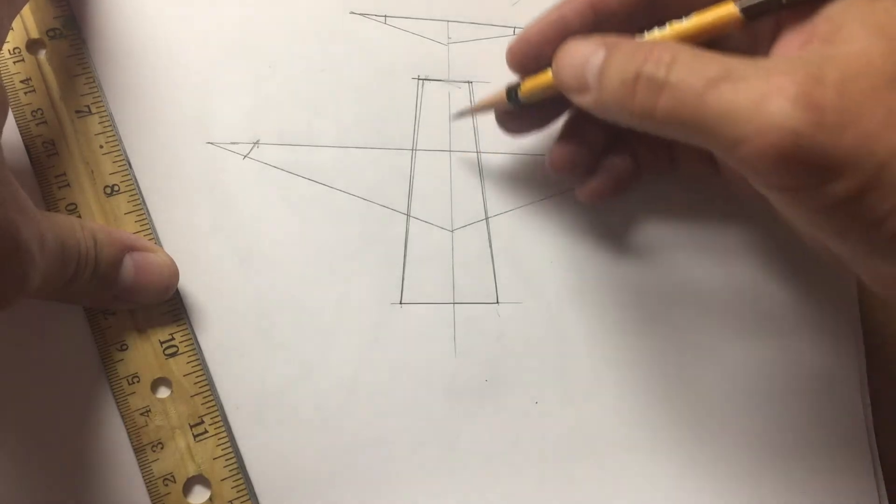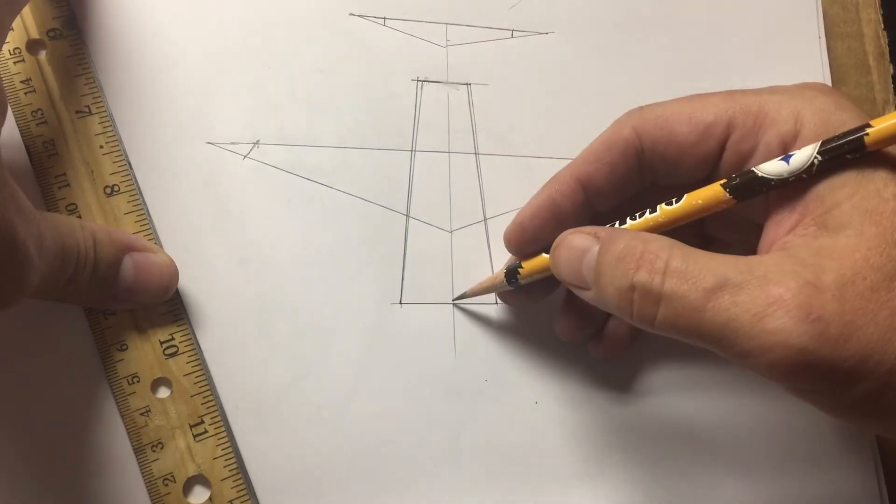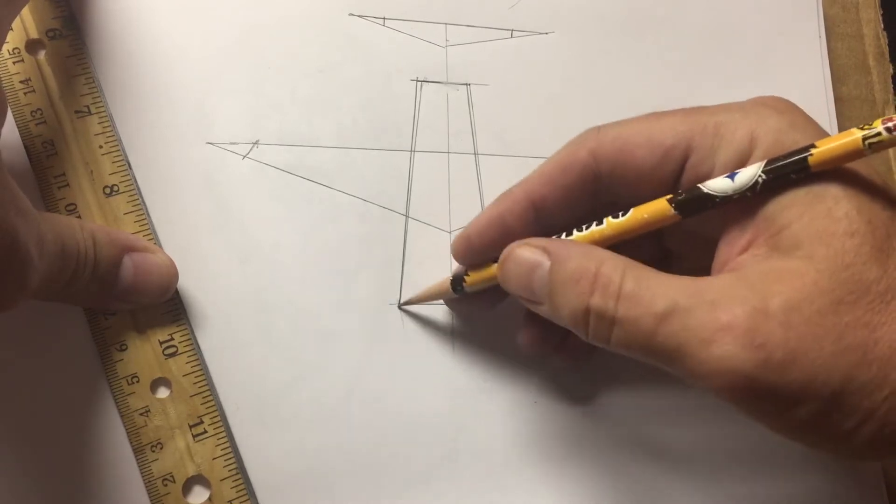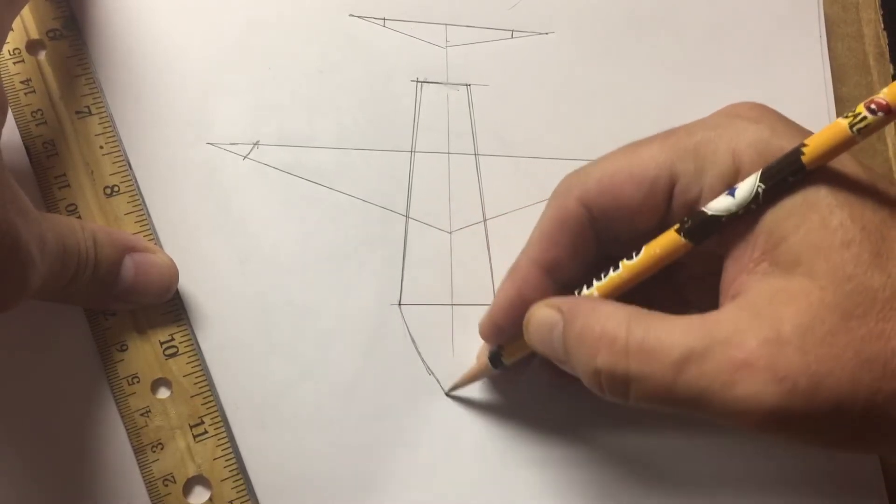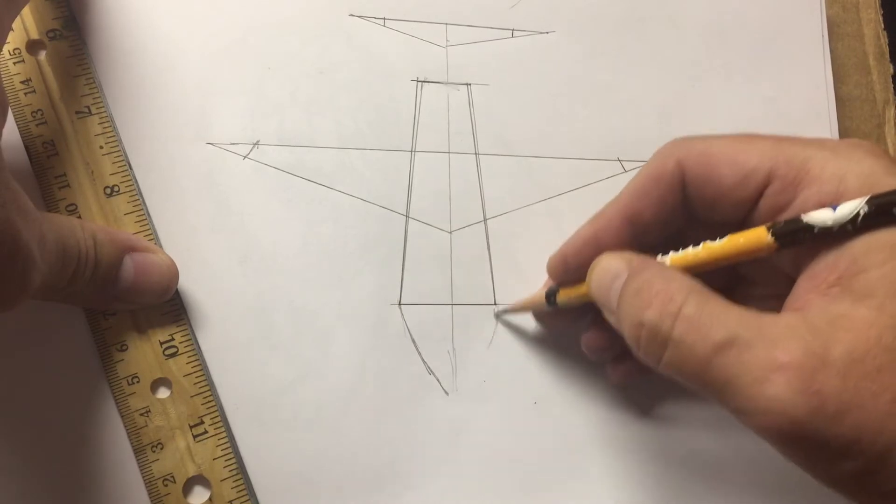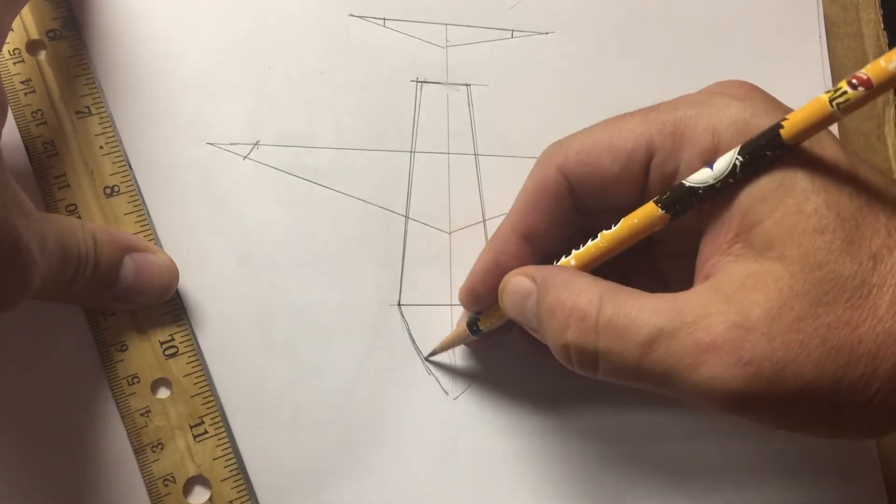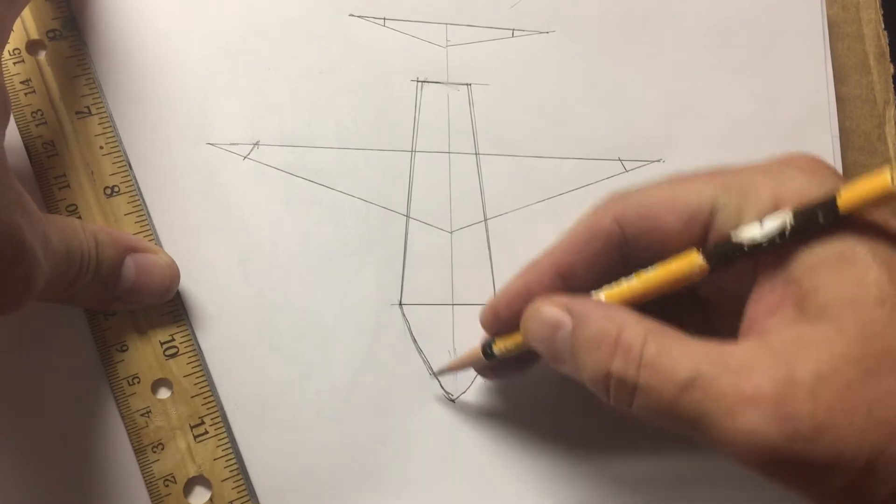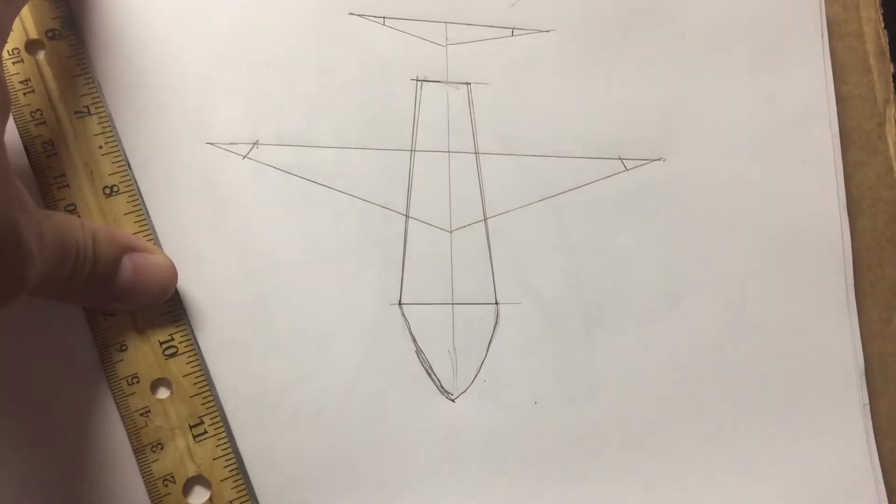About halfway down the block in the front, and then begin to shape a pointed nose. Right about there, right about there. Soft flowing angles up to the point of the plane.